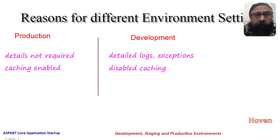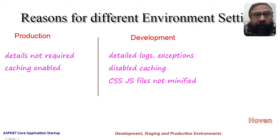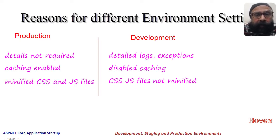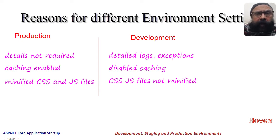Another example is that during development it is easier to debug a well-formatted CSS and JS file. But the CSS and JS scripts can be served in minified form when the app is running under a production environment. So we have a clear-cut case for different settings for different environments in an ASP.NET Core application.